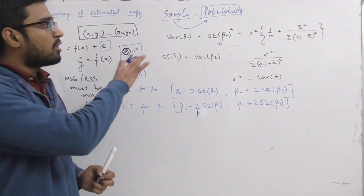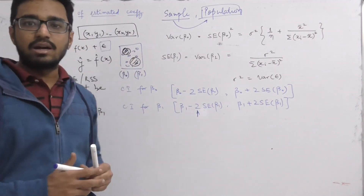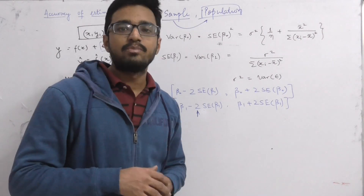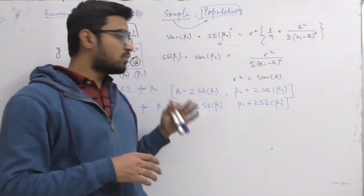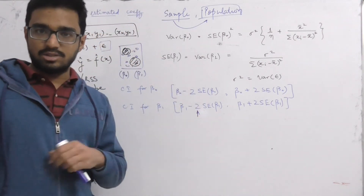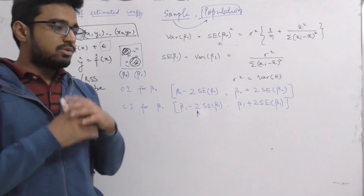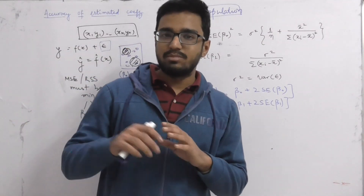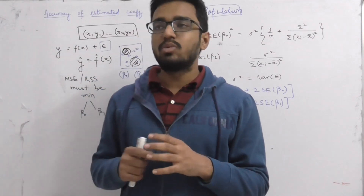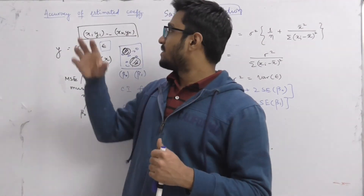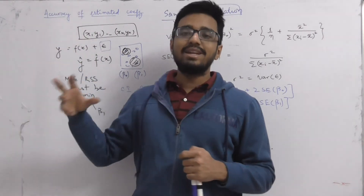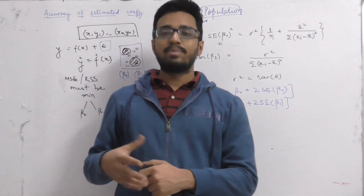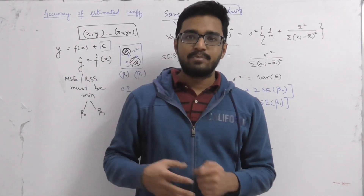These formulas are directly taken from the book 'An Introduction to Statistical Learning'. You can go through that section of the book. So this was about why we need to calculate the accuracy and how we calculate the accuracy of beta0 and beta1.